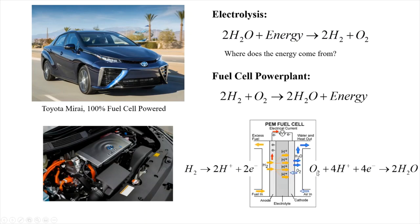In a fuel cell, we have an anode and a cathode. At the anode, hydrogen is oxidized to two protons and two electrons. Those electrons travel through an external circuit to the cathode, where they react with oxygen and protons — which cross a membrane — to make water. The electrical current passing from anode to cathode goes through an electrical motor, which turns the wheels of the car.